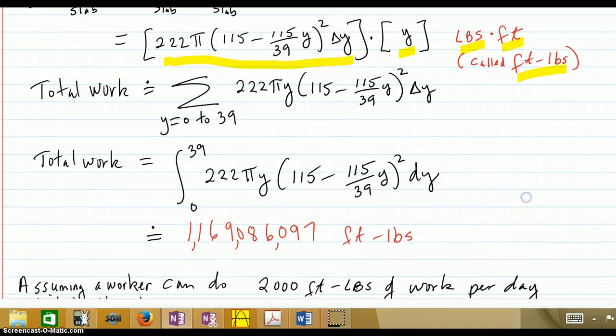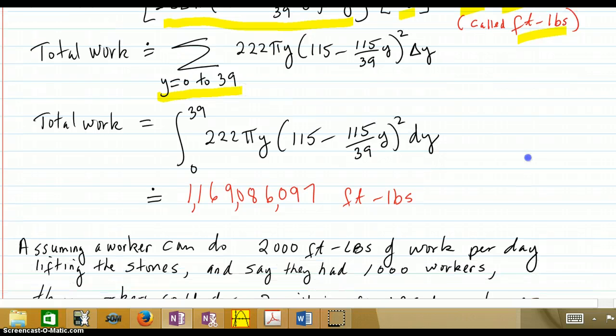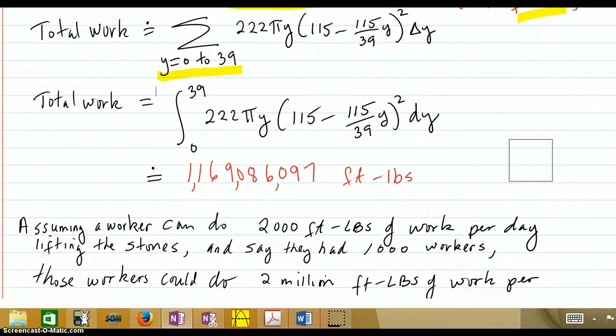The total work is the sum over all those cuts from Y equals 0 to 39. Then we have the total work equals the integral right over here. And I did a Simpson's calculation with the calculator and got this amount of foot-pounds. So that's the total work it took to build the cone.